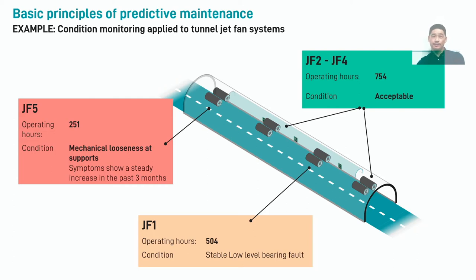The fan operational hours are also listed alongside each fan on the slide, and we can see that fans 1, 2 and 6 have recorded almost twice as many running hours as fan 5. Using a maintenance schedule based on running hours would have prioritized fans 1, 2 and 6 over fan 5 for maintenance checks. However, in our example, we can see that fan 5 would have not received attention until a later tunnel closure, during which the looseness may have progressed, resulting in a potential failure.